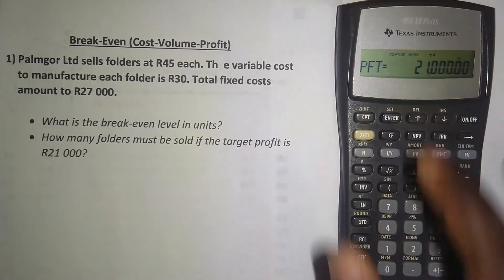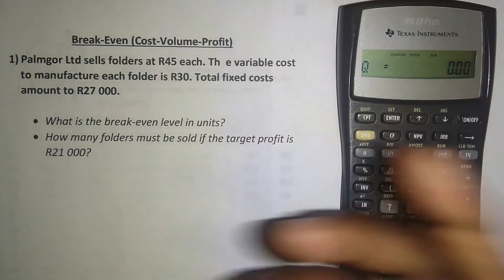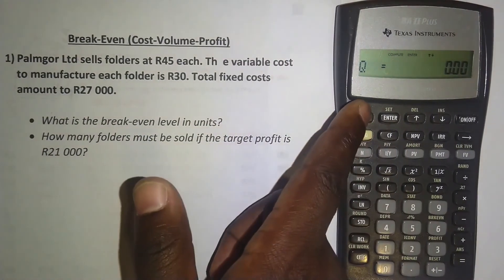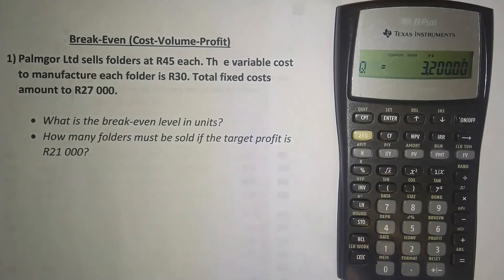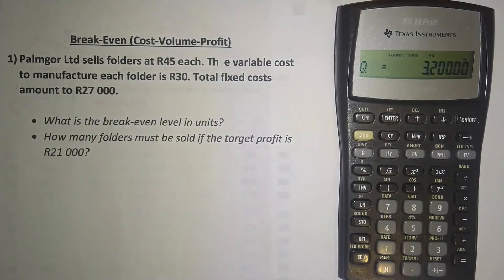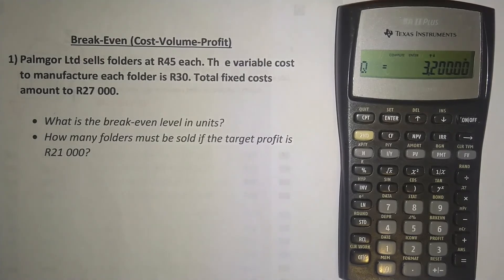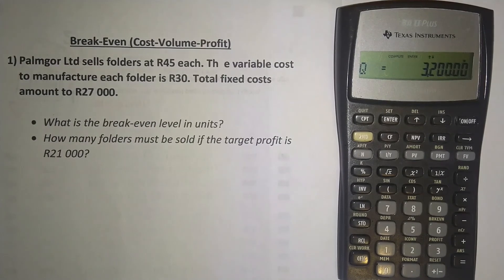Press the downward arrow — we want to know how many folders should be sold to achieve that profit of 21,000 rand. Press CPT to compute, and there we have it: to make 21,000 rand in profit, you need to sell 3,200 folders. That is how you do the break-even or cost volume profit analysis using the BA2 Plus Texas Instrument financial calculator.